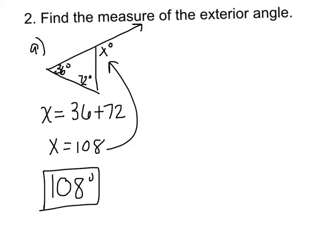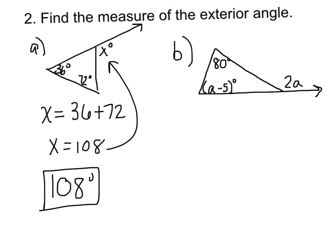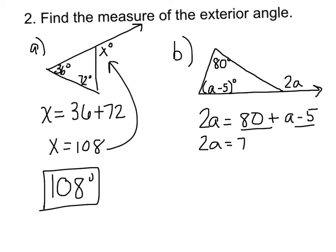Let's do part b. We know three angles: 2a, a minus 5, and 80 degrees. The 80 degrees is the exterior angle that is equal to both of these interior angles. So if we write our equation: 2a equals 80 plus a minus 5. Combine like terms: 2a equals 75 plus a. Move the variables to one side — subtract a — that gives me 1a equals 75. That is only the value of a, not the angle measures yet.